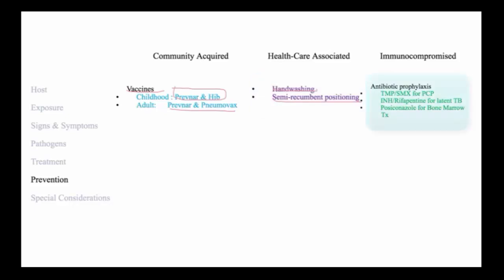In the case of immunocompromised pneumonia, you prevent certain pathogens such as pneumocystis with Bactrim, according to CD4 criteria in the case of HIV disease, or exposure to immunosuppressive therapy in the case of transplant recipients. Because of the possibility of tuberculosis, you screen for tuberculosis and treat latent tuberculosis aggressively, usually with a combination of INH and rifapentin. And in bone marrow transplant recipients, posaconazole is used to prevent fungal pneumonia.